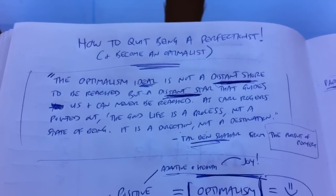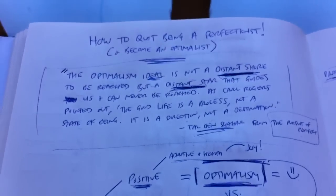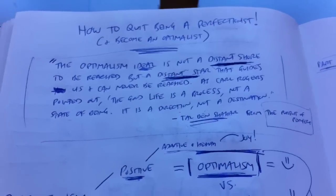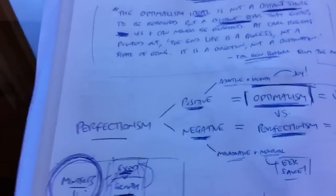And when you embrace reality like that, which is one of the key ways to move from perfectionism to optimalism, you're in a good position. So let's take a look at the difference between perfectionism and optimalism.